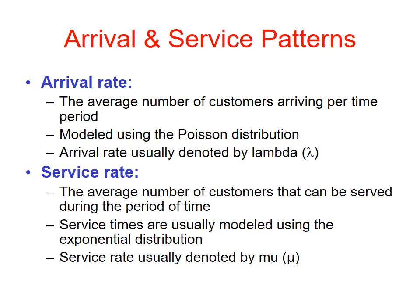Arrival and service pattern. Arrival rate: the average number of customers arriving per time period, modeled using the Poisson distribution, usually denoted by lambda. Service rate: the average number of customers that can be served during a period of time, usually modeled using the exponential distribution, and usually denoted by mu.